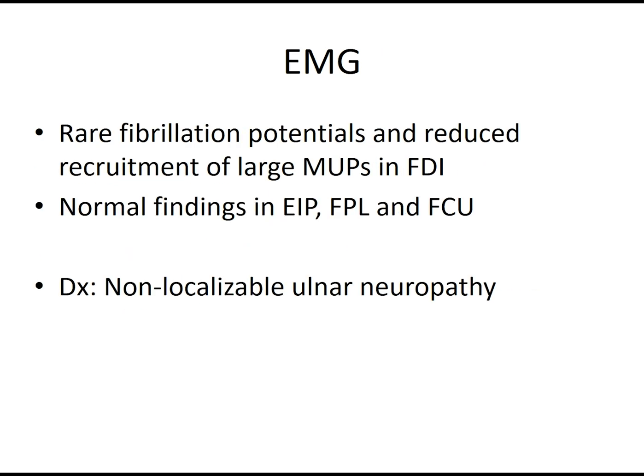EMG showed occasional fibrillation potentials and neurogenic motor unit changes in the first dorsal interosseous. Normal findings in EIP and FPL, so other C8 non-ulnar innervated muscles. Also normal findings in the proximal ulnar muscle flexor carpi ulnaris.